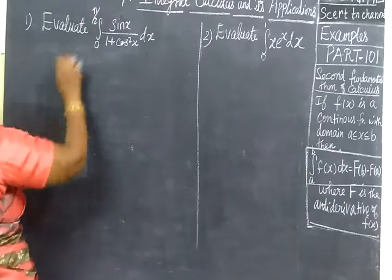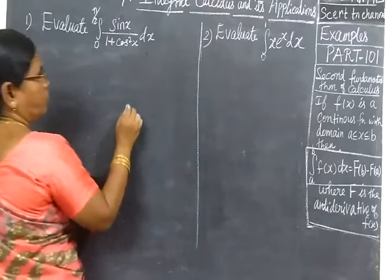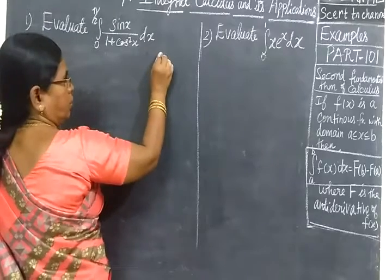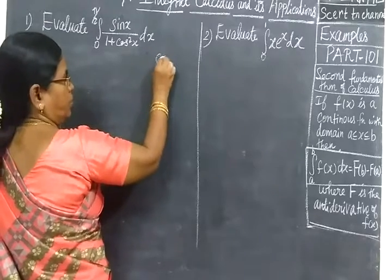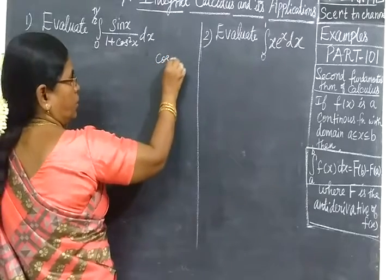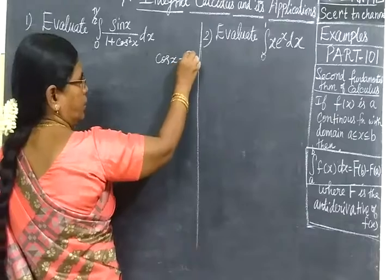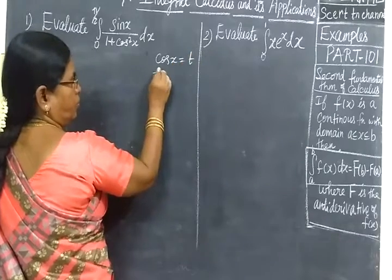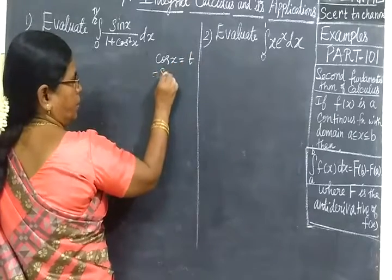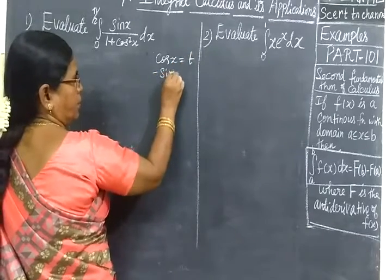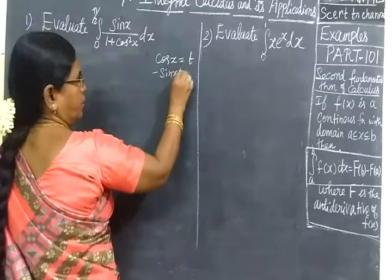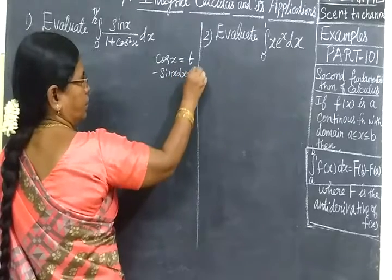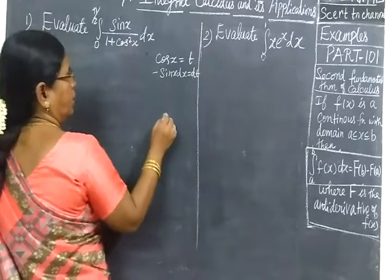Integral from 0 to π/2 of sin x divided by (1 + cos x) dx. Now substitute cos x equal to t. So differentiating: minus sin x dx equals dt.